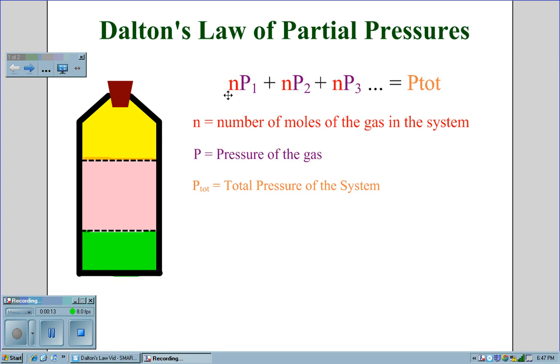In this case, we use the Dalton's Pressure Law equation. Np1 plus Np2 plus Np3 equals the total pressure in the system, where N equals the number of moles of gas, p equals the pressure of each gas, and p total equals the total pressure in the system.